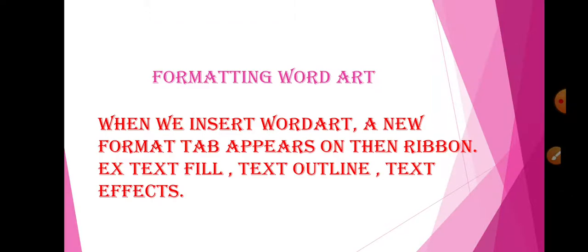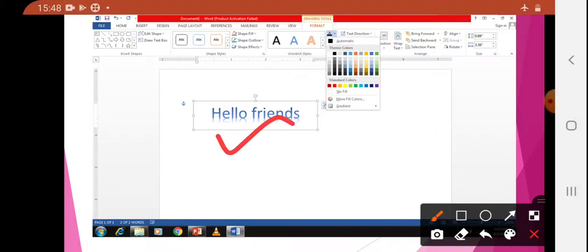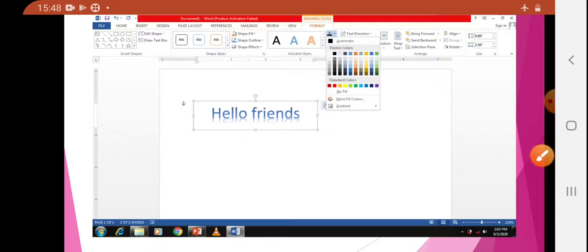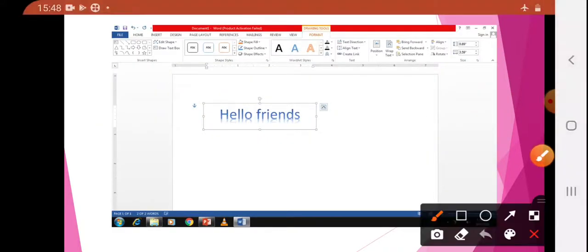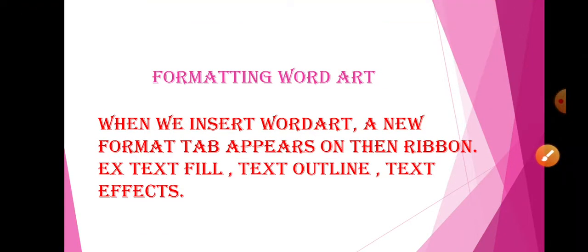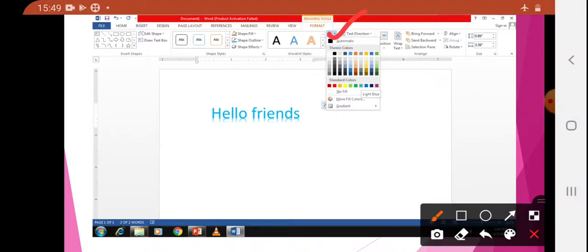Now, formatting WordArt. When we insert WordArt, a new Format tab appears on the ribbon. For example: Text Fill, Text Outline, Text Effect — I will show you. When you insert WordArt and go to Format, you get Drawing Tools Format, and all these formatting options are present there.